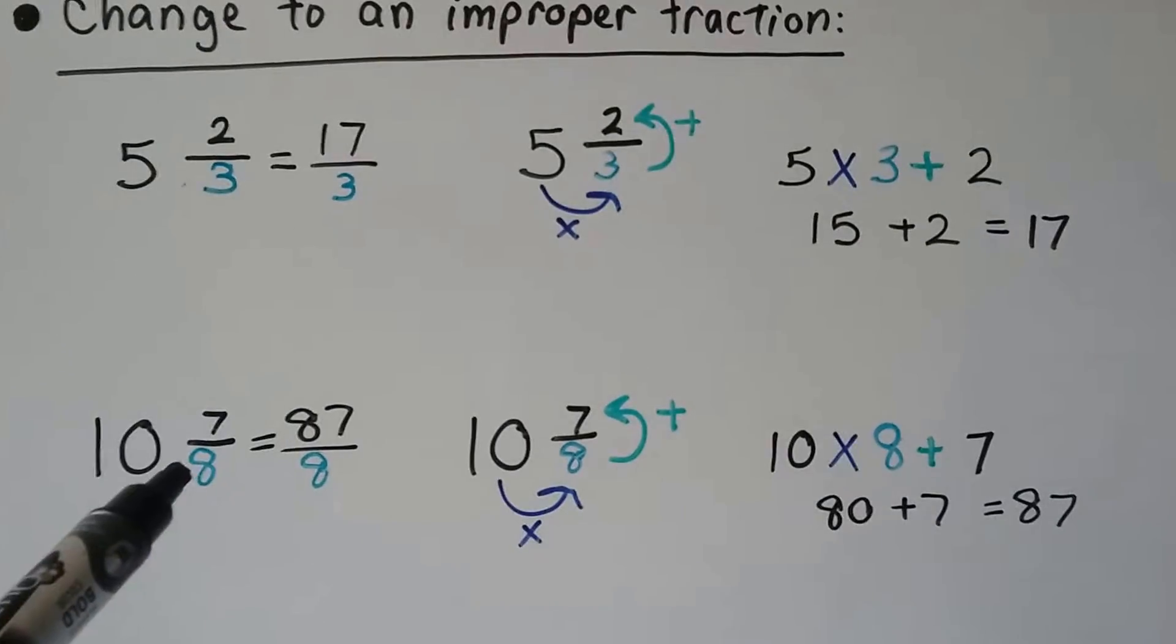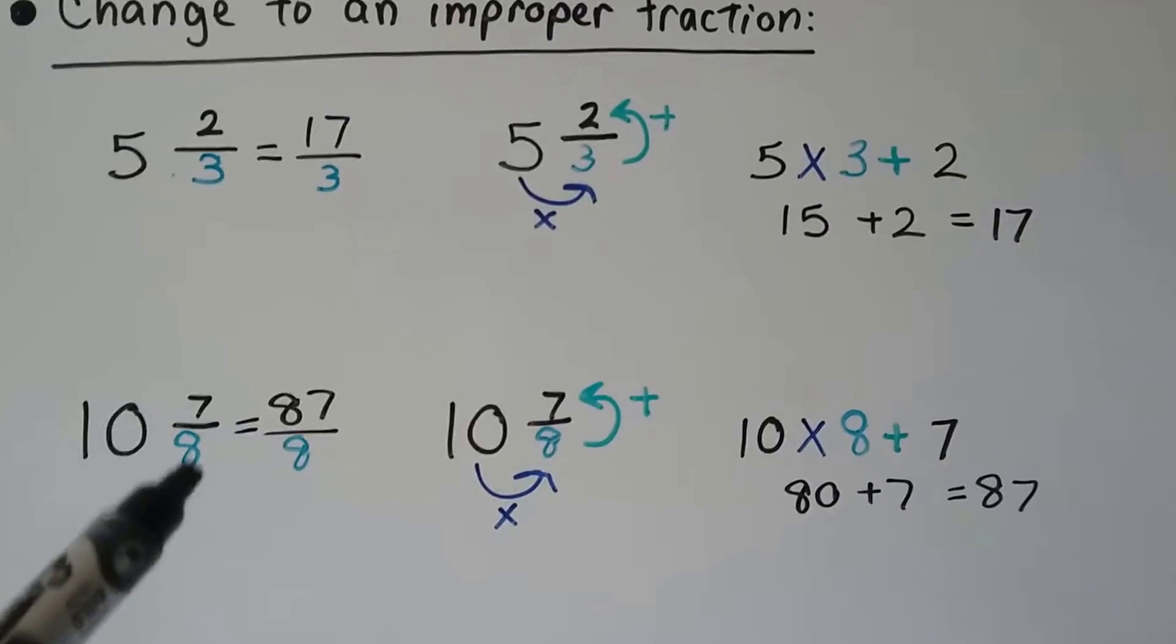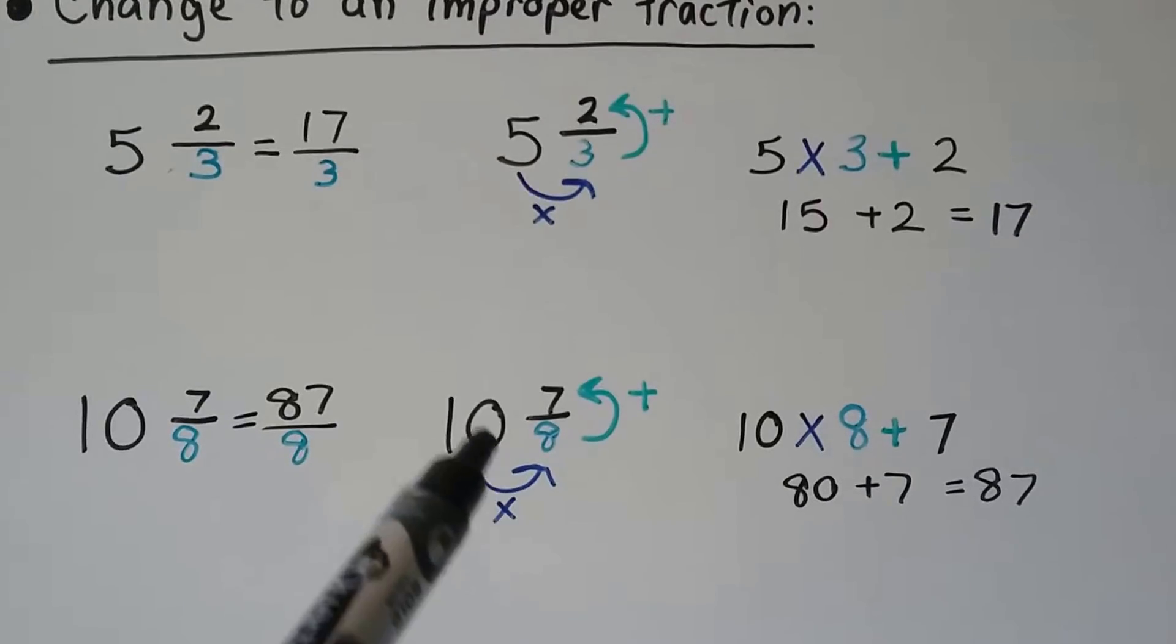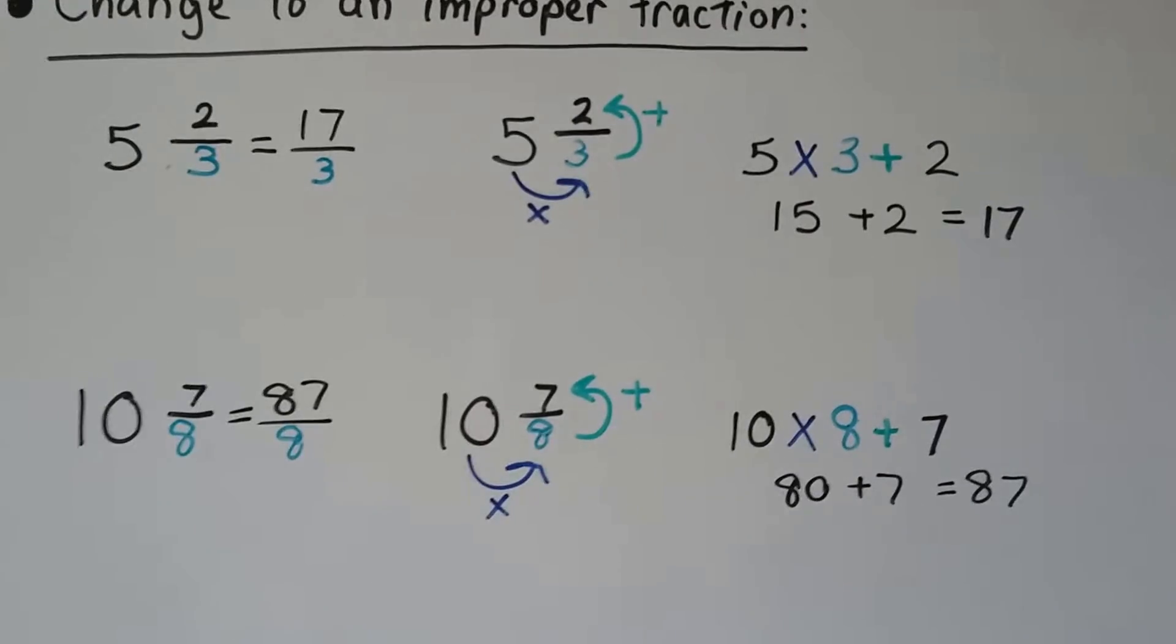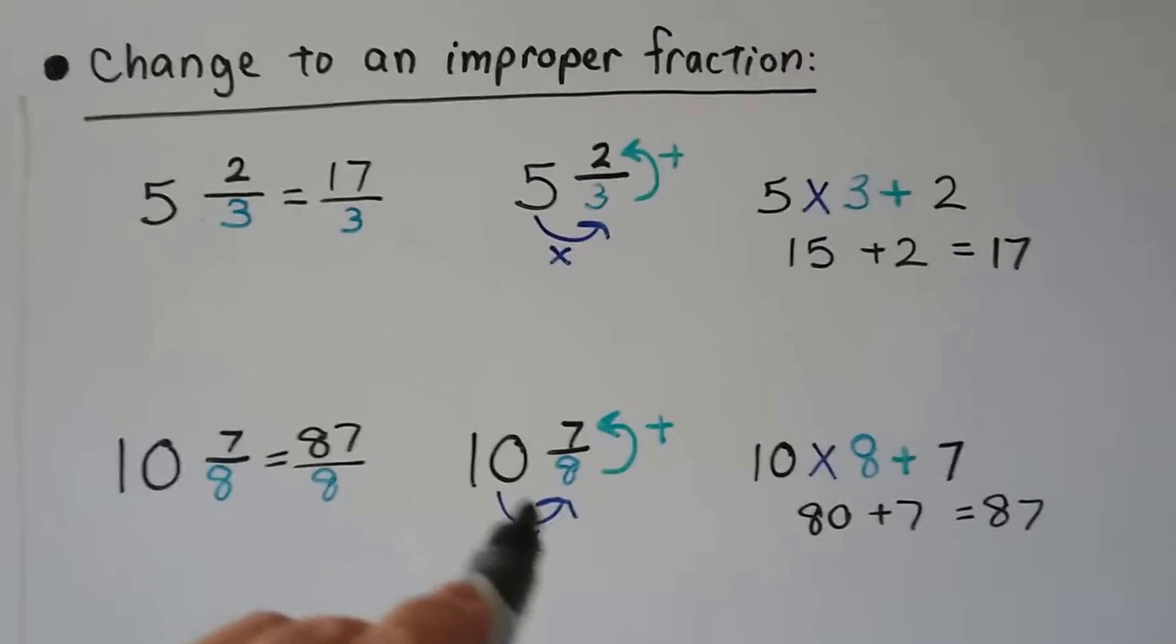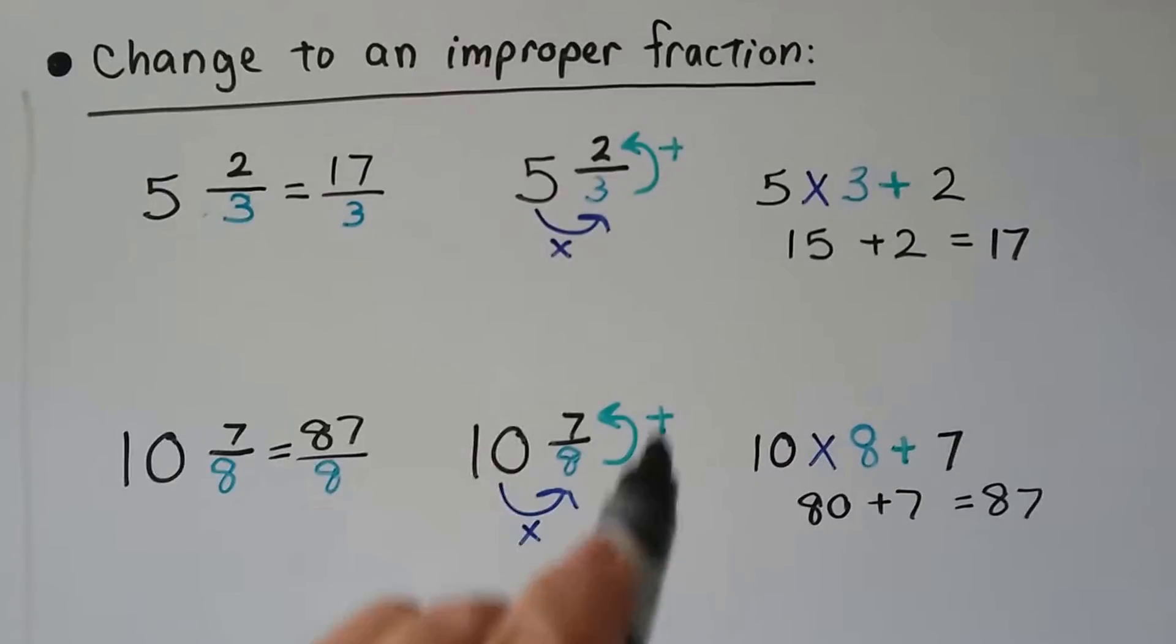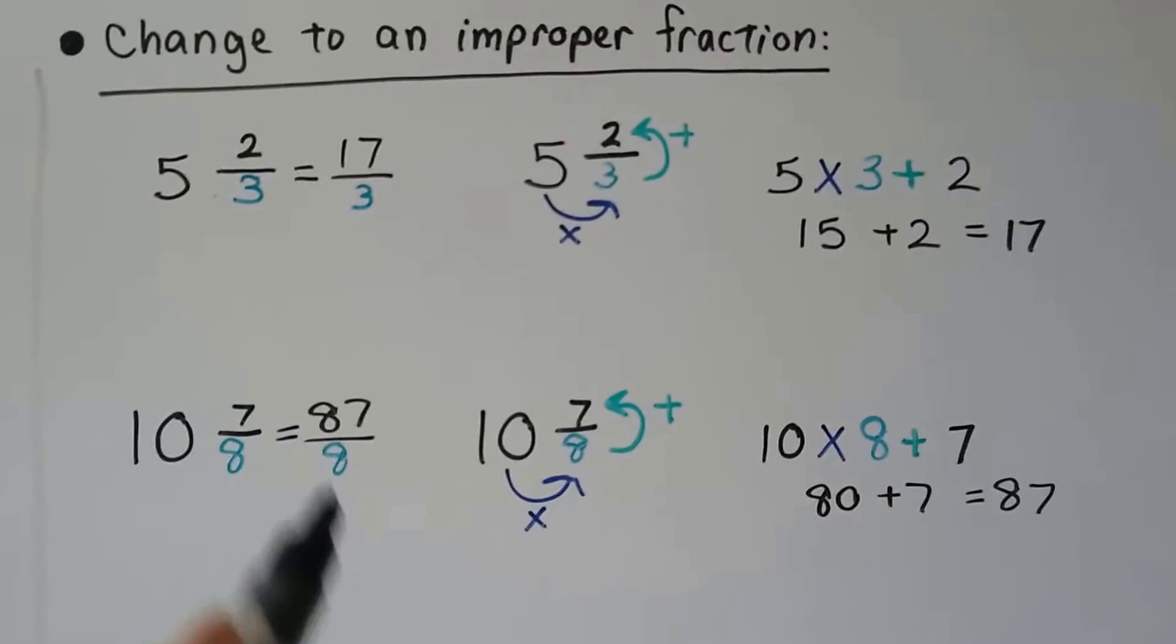Now here the denominator is an 8. So that's the denominator we're going to use as the improper fraction. 10 times 8 is 80 plus that 7 is 87. We have 87 eighths. It just goes around counterclockwise. Multiply then add. Multiply then add and use that denominator.